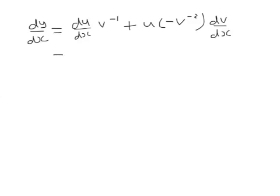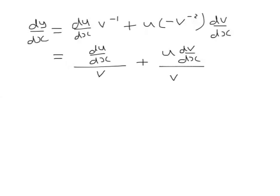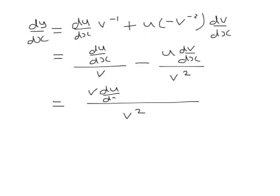So this is where we were. Let's write that as du by dx all over v, because that's what v to the minus 1 means, plus u times dv by dx over v squared, but that now becomes a minus. That minus sign goes there, and v to the minus 2 is 1 over v squared. So putting everything over v squared, we get v du/dx minus u dv/dx all over v squared, and that's what dy by dx is.